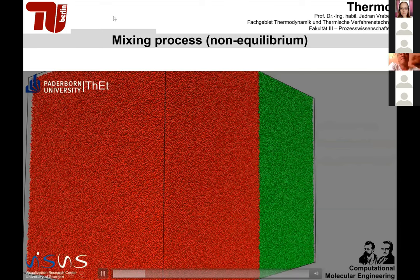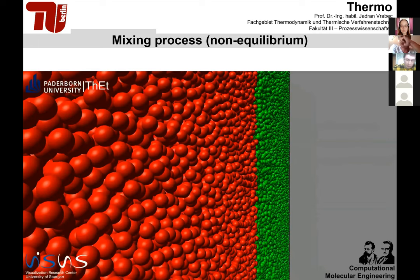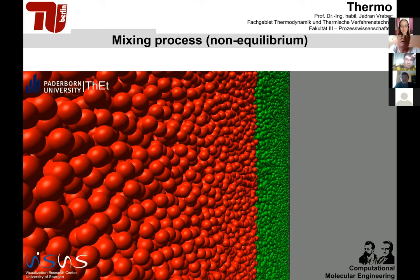Question: What can you say about Soret coefficients or thermal diffusion coefficients—how can you measure them with molecular simulation? Answer: Very similar to what we did here, we need to look at correlation functions between mass flux and energy flux. There is a framework available, derived at least for binary mixtures. We are currently working on a first paper on this topic with colleagues from Stuttgart University, comparing equilibrium molecular dynamics with non-equilibrium molecular dynamics in terms of computational advantages and disadvantages.